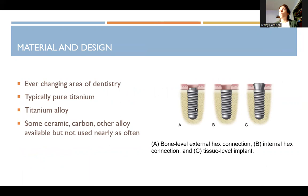There are different kinds of designs of an implant. There's a bone-level internal hex connection — you can see the hexagon shape on the inside. There's an external hex connection where it sticks up, and an internal one that you can't see, and then there's a tissue-level implant. Different surgeons will prefer different designs.